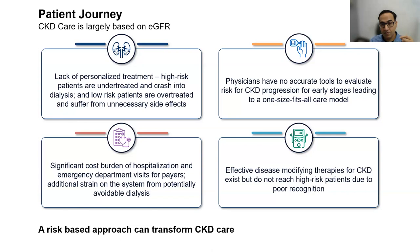If you're a pharmaceutical company, they are now finally interested in kidney disease. There are all these effective disease-modifying therapies, but they don't reach high-risk patients until it's late, because high-risk patients in early stages of kidney disease are under-recognized — they're invisible. They're partially invisible because we don't order albuminuria. My view is that a risk-based approach, thinking about patients across a spectrum of risk, can transform CKD care.